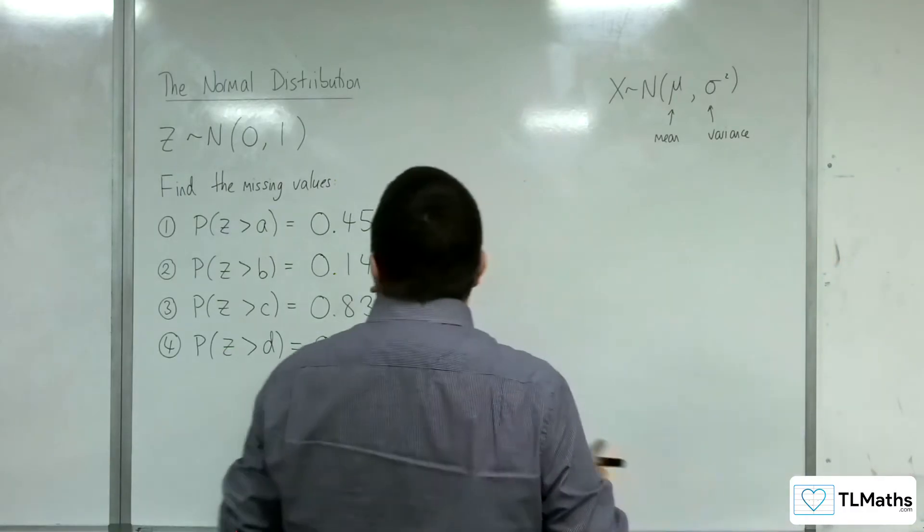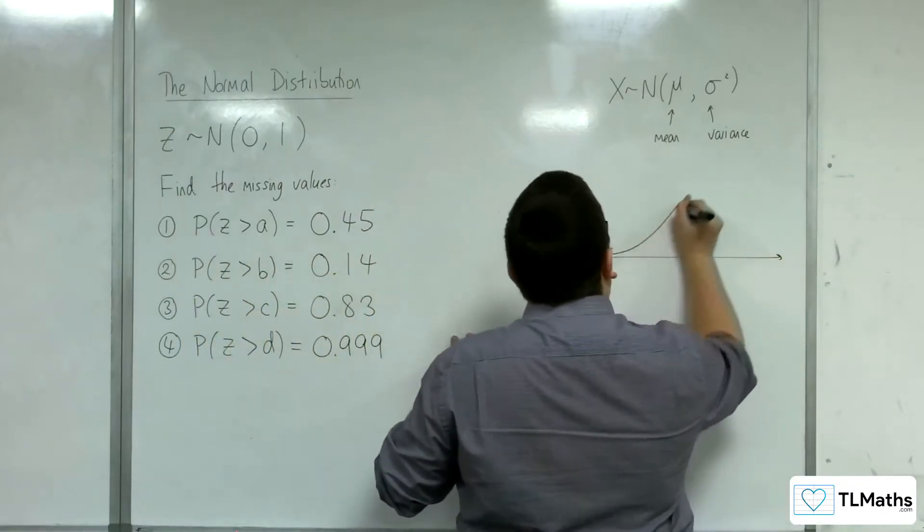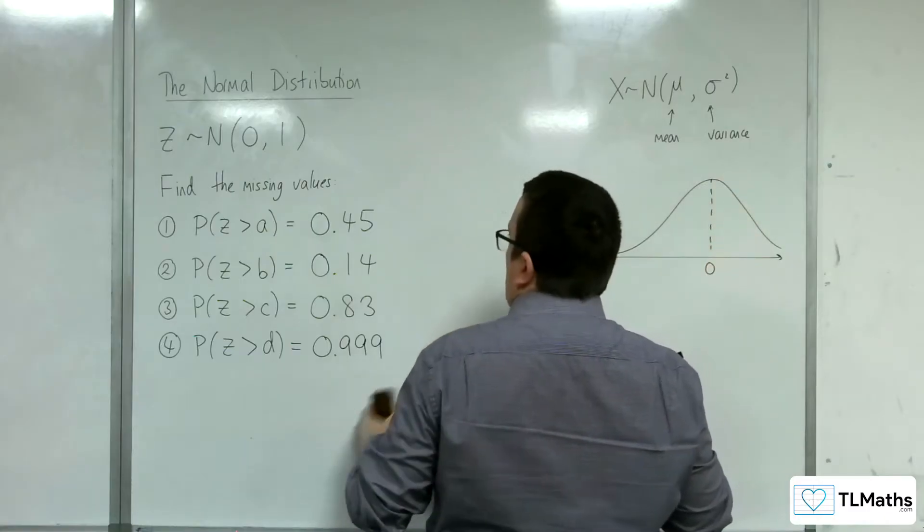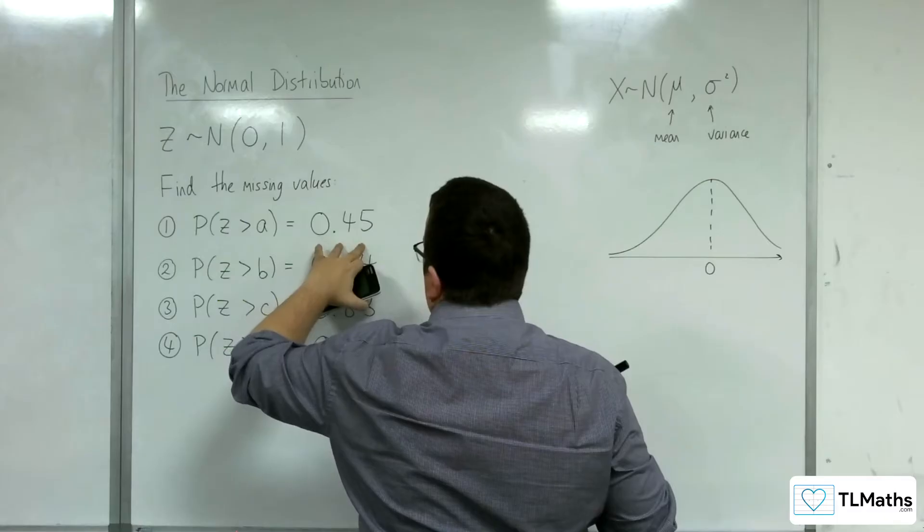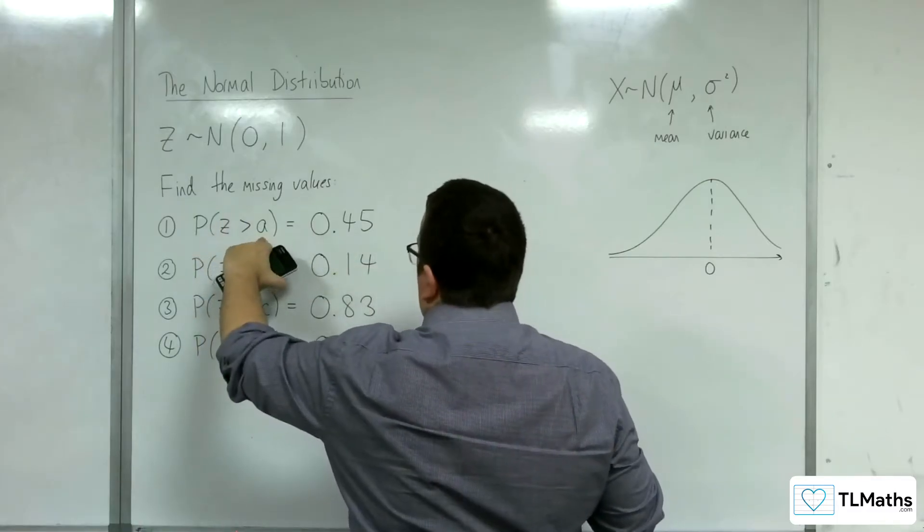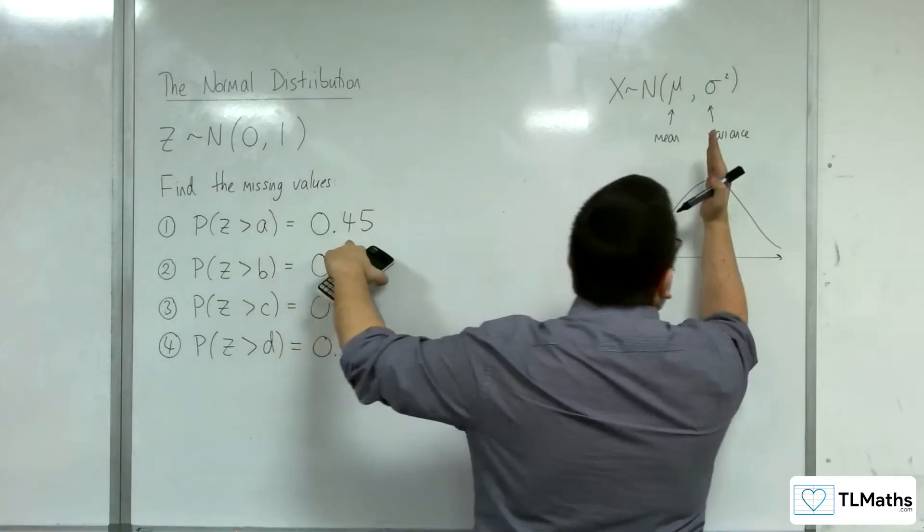Let's interpret the first problem. The mean is 0, and the probability of Z being greater than A is 0.45. So the region to the right of A has a probability of 0.45.